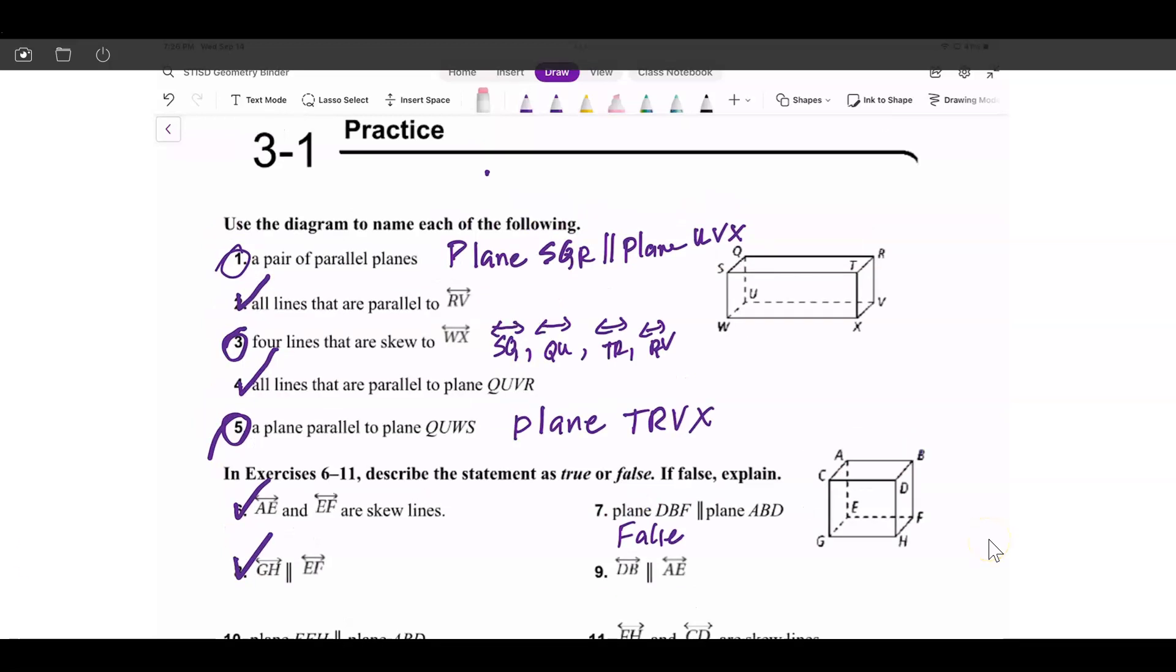Number nine, we have line DB, and those two lines that are going up and down means parallel to AE. I'm going to trace that. So we have DB, that's the line, and we have AE. There's the other line, and so they're not parallel, so this would be false. The lines are skewed. And the one before that was false because the two planes intersect.